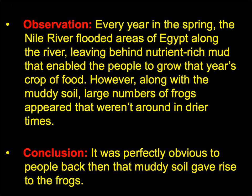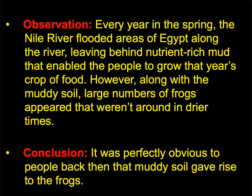In the Nile River — every year, in case you don't know this from history class — it floods and deposits really rich soil along the shore. This is one of the reasons why the Nile Delta was such a great place for cultivating crops and still is today. What's interesting is that in the rainy season, when the Nile River would overflow its banks and deposit this thick mud, frogs would just crawl out of the ground. So it was obvious to people that this black mud must spontaneously generate — create out of nowhere — these frogs.